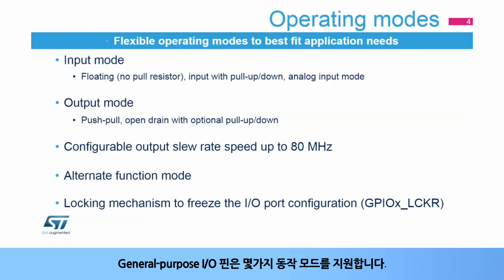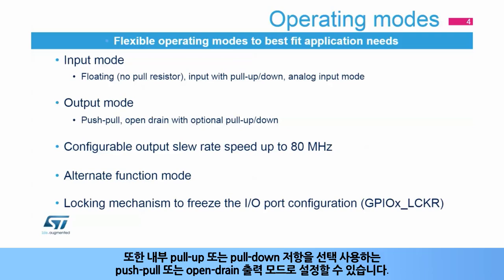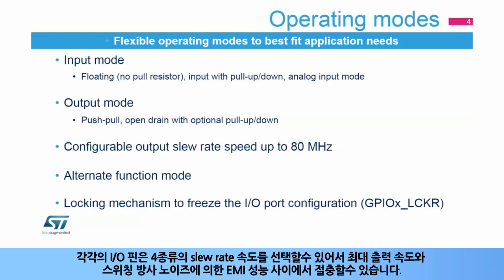General purpose I/O pins can be configured into several operating modes. An I/O pin can be configured in an input mode with floating input, input mode with an internal pull-up or pull-down resistor, or as an analog input. An I/O pin could also be configured in an output mode with a push-pull output, or an open-drain output with an internal pull-up or pull-down resistor. For each I/O pin, the slew rate speed can be selected from four ranges to compromise between maximum speed and emissions from the I/O switching and adjust the application's EMI performance.